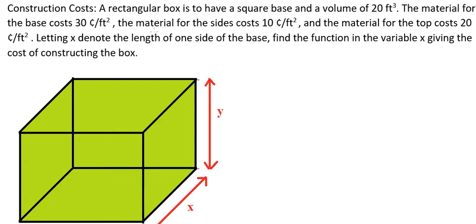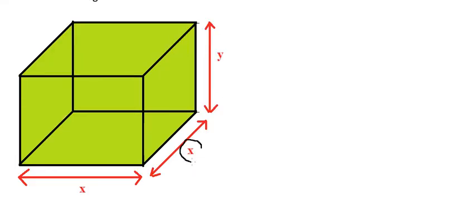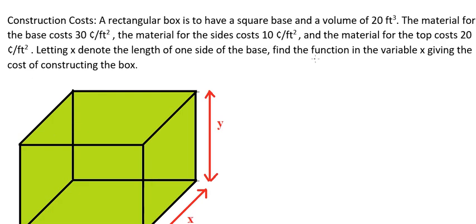The material for the sides costs 10 cents per square foot, and the material for the top costs 20 cents per square foot. Letting s denote the length of one side of the base, find the function in the variable s giving the cost of constructing the box.